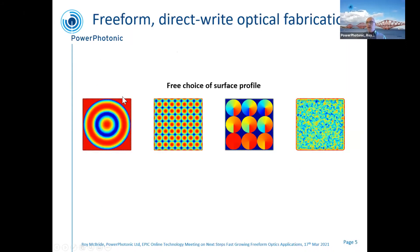We shape these beams using a free-form direct-write process that we developed at Paraphotonic. We can make everything from fairly arbitrary asphere-type shapes — rotationally symmetric shapes — down to arrays of these shapes on wafers, down to arrays where every single lens element is different, and we can even make surfaces that look completely random — completely free-form surfaces. These are the surfaces we use for beam shaping.